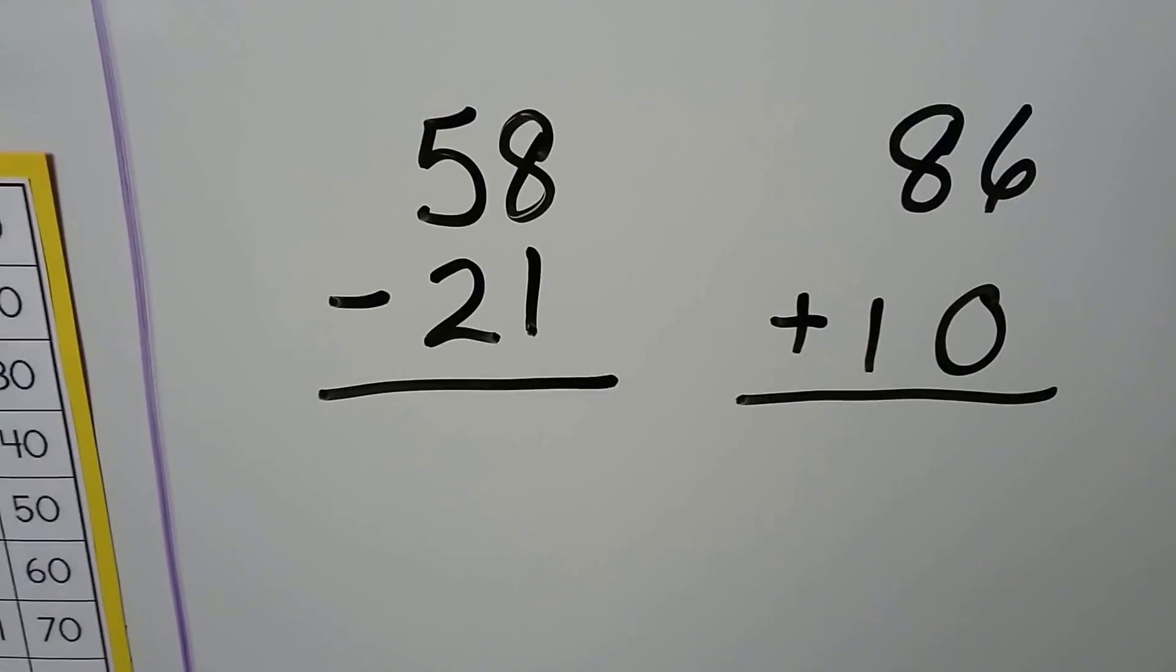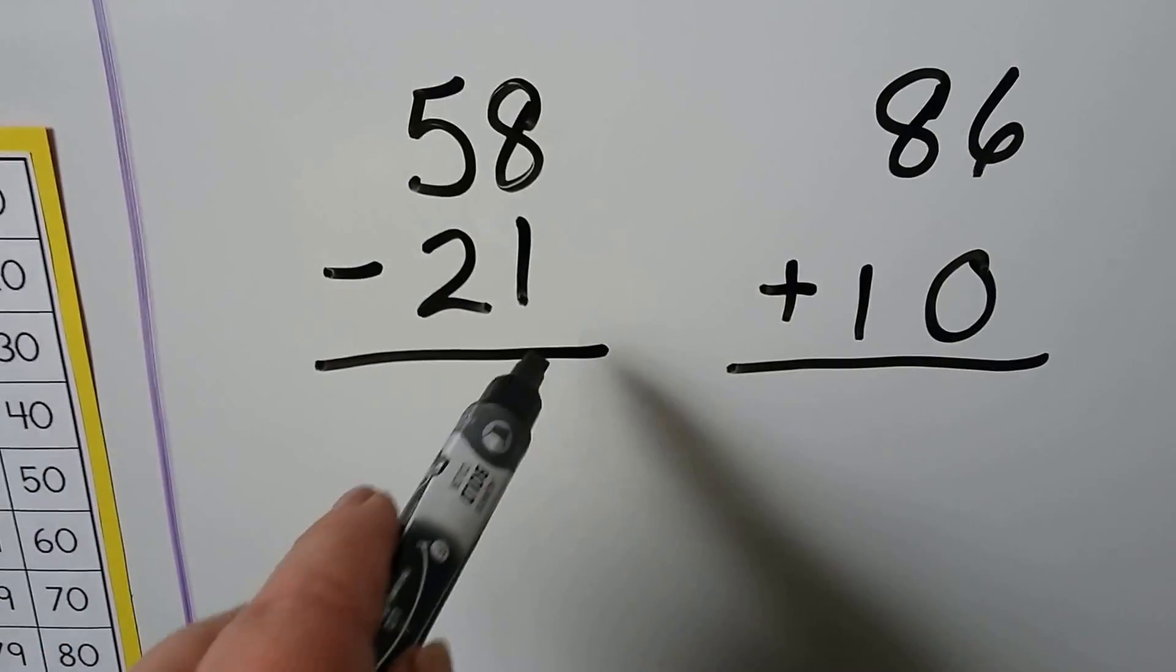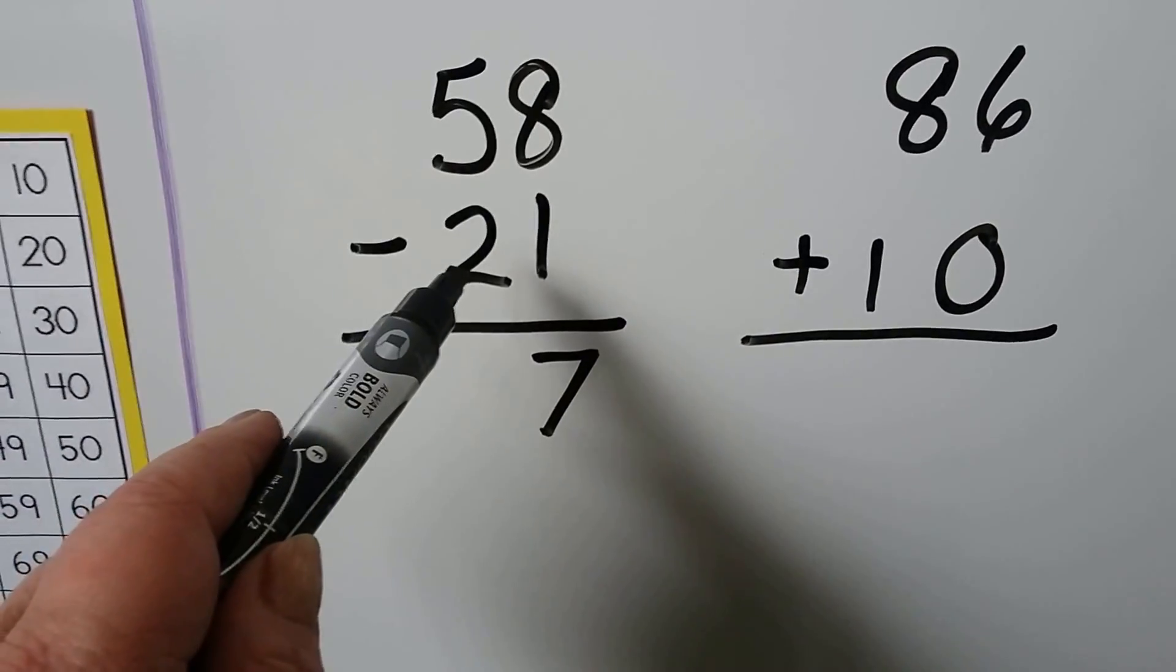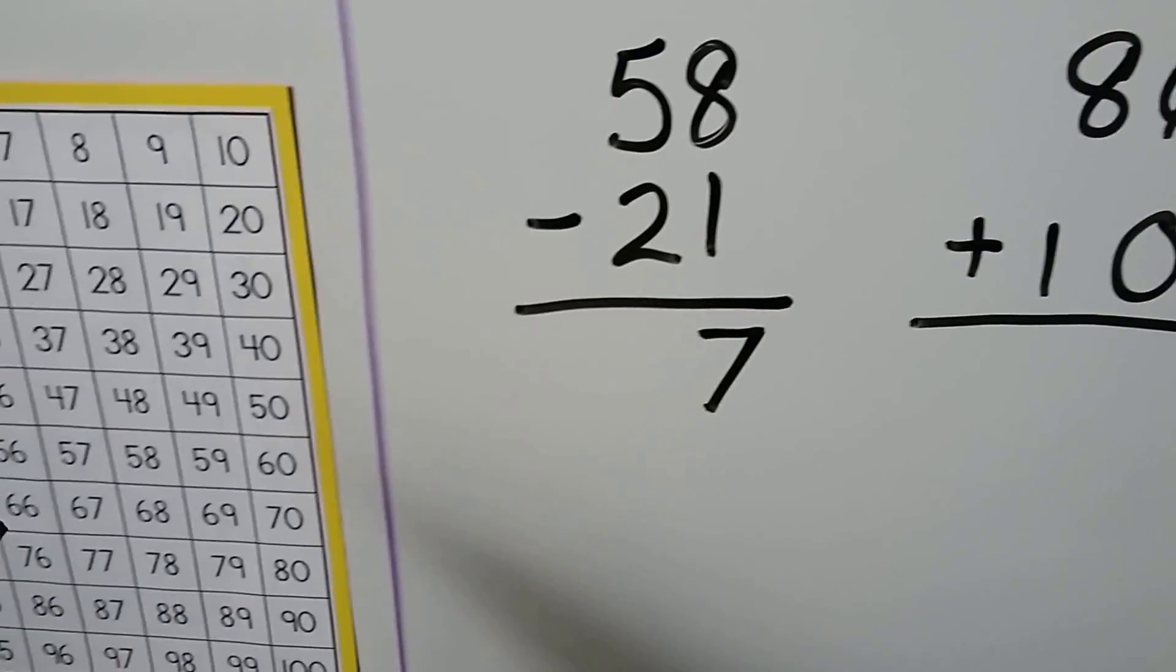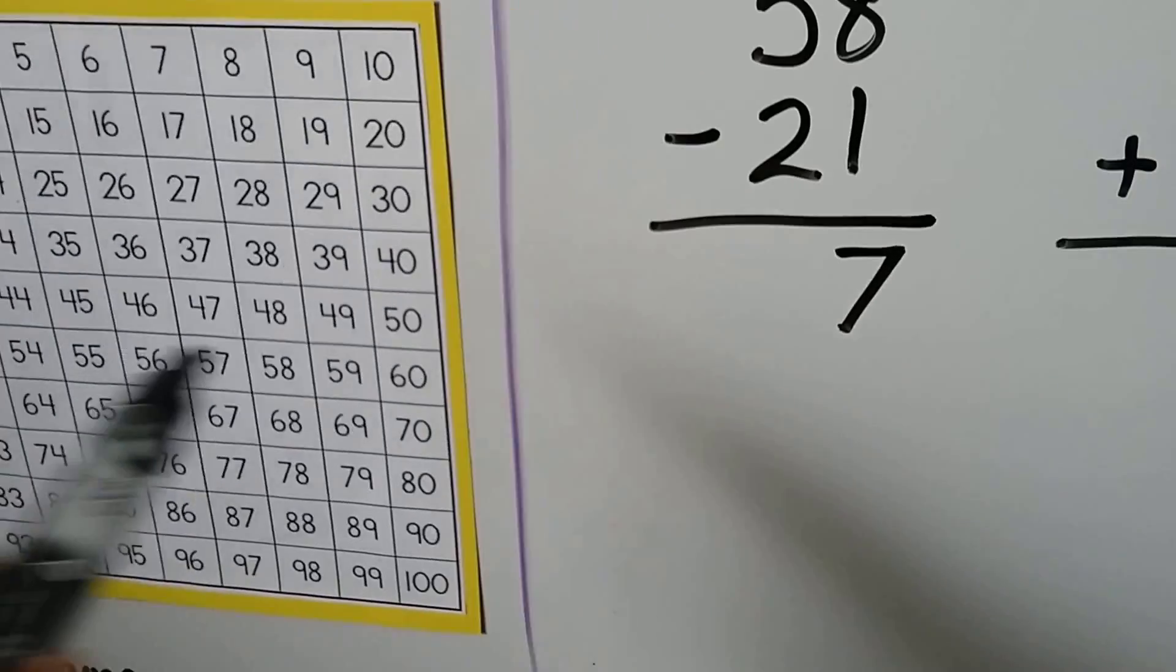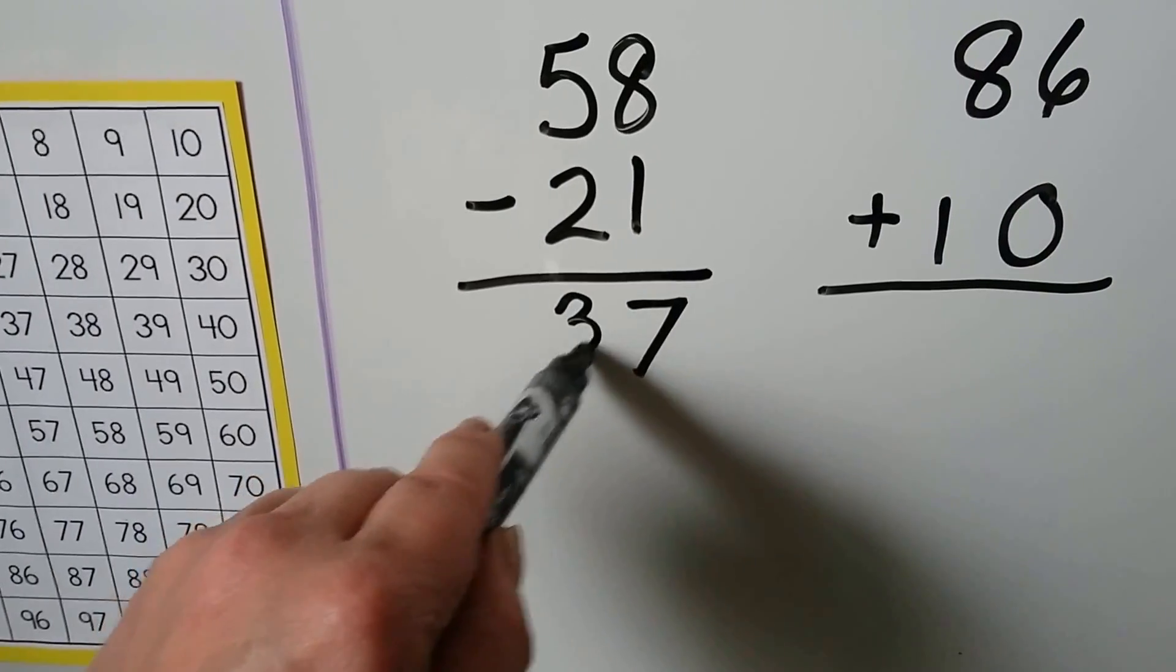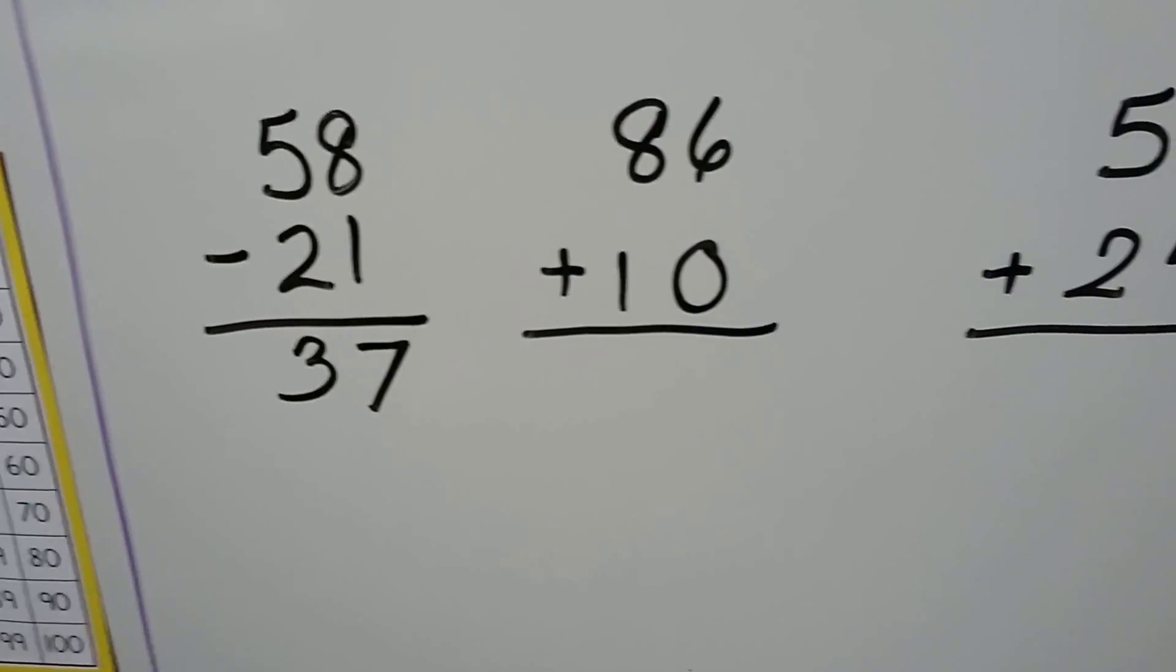58 minus 21. It's subtraction. We're going to do 8 minus 1. So that's 1 less than 8. It's a 7. 5 minus 2. We have 5 10s and we need to take away 2 10s. We can count back, starting with the 50 right here and count back 2 10s. 1, 2. It puts us at 3 10s, 30. Because of the 1s, the answer is 37. The difference is 37.